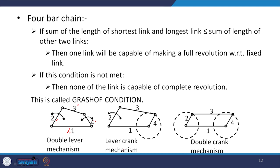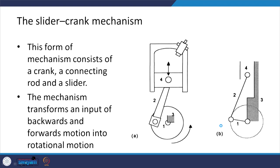In a lever-crank mechanism, link 2 does not have complete rotation while link 4 does. The link with 360-degree rotation is called a crank and the one without is called a lever. In a double crank mechanism both link 2 and link 4 have 360-degree revolution. The slider-crank mechanism consists of a crank, a connecting rod, and a slider.